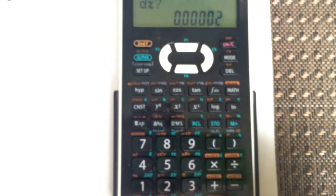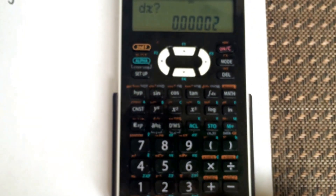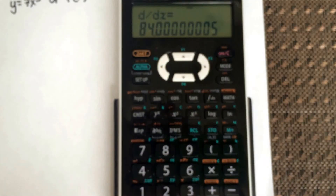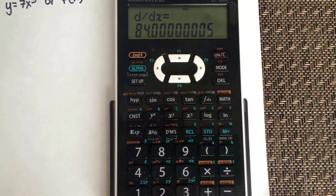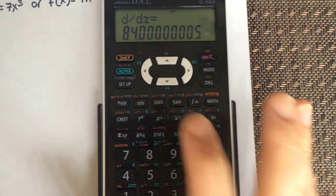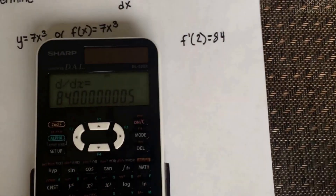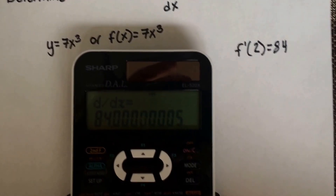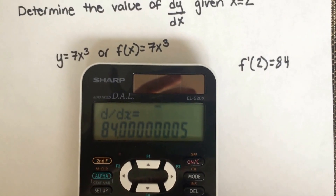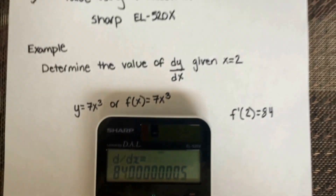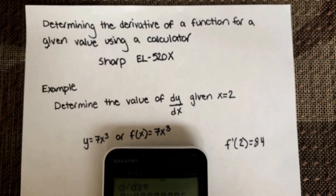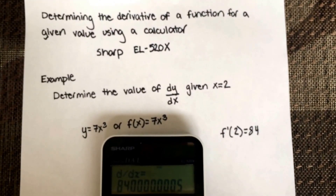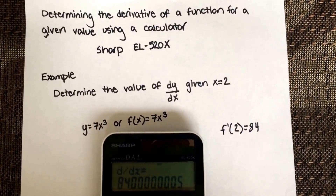First it's going to display dx. Then if you hit equals again, you see that it tells you the derivative is 84. And so the derivative for this function is 84. That's how you solve for the derivative of a function using the Sharp EL520x.